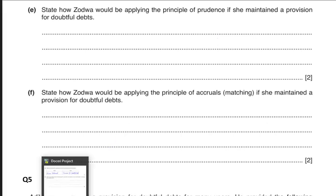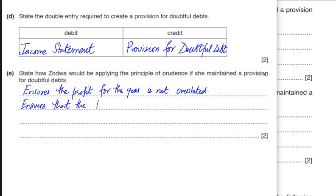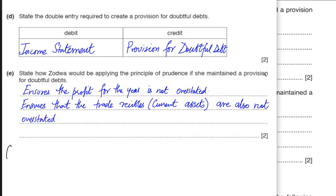This is how provision for doubtful debt applies prudence. By applying prudence we ensure that the profit for the year is not overstated, and that trade receivables — current assets — are also not overstated. Applying prudence ensures our profits and assets are not overstated. If overstated, we are violating the prudence concept and our accounts are not showing a true and fair view.